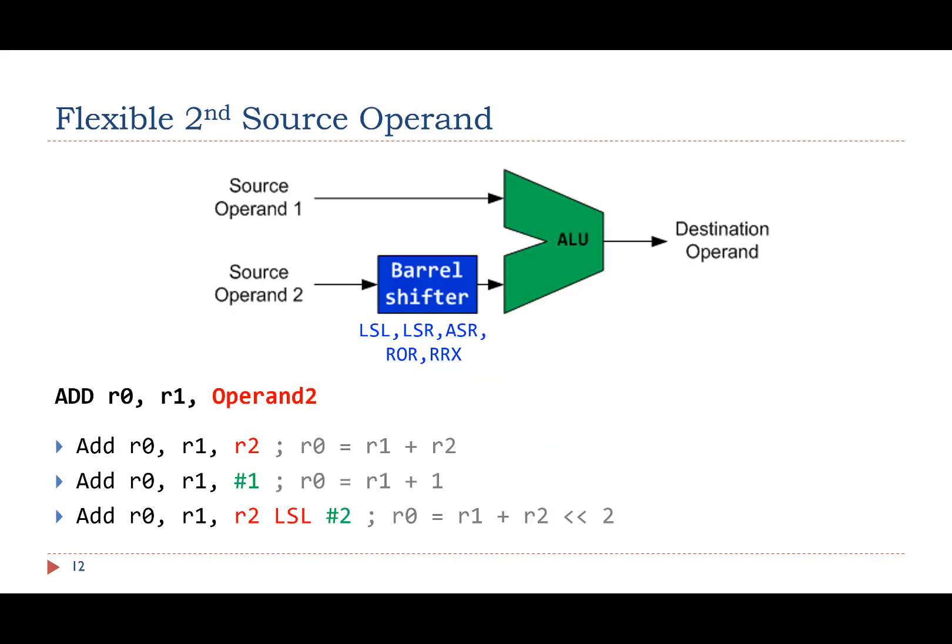In all examples presented so far, we use a register as the second source operand. However, ARM Cortex-M allows the second source operand to be very flexible. It can be a register, a constant value (also called an immediate number), or a register shifted by an immediate number.